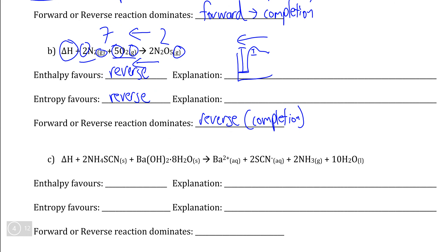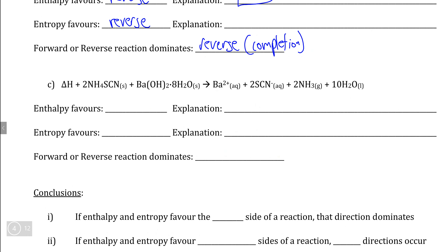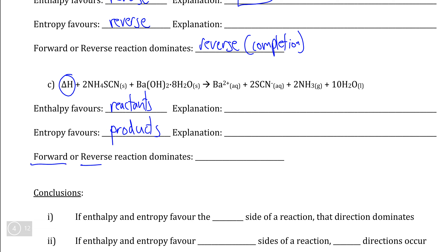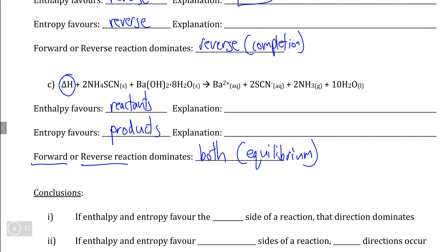But when we consider the reaction we dissected earlier, because the reaction is endothermic in the forward direction, enthalpy is going to favor our reactants, but based on state of matter and the number of particles, entropy is going to favor the products. Therefore neither the forward nor the reverse reaction will completely dominate over the other, so we get both reactions happening. This is a situation where we can end up with an equilibrium — where enthalpy and entropy favor opposite sides of a chemical reaction, leading to both directions happening simultaneously.